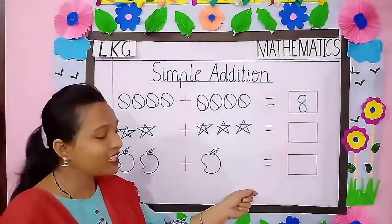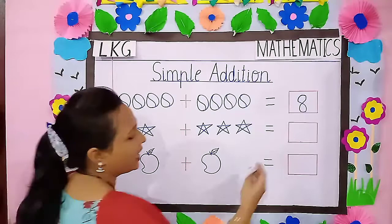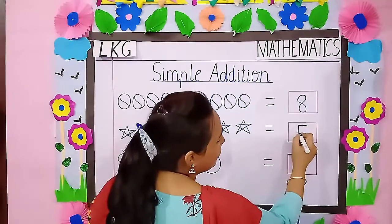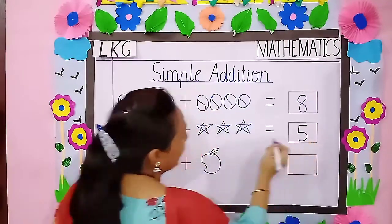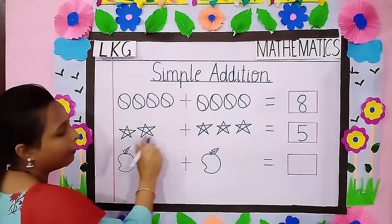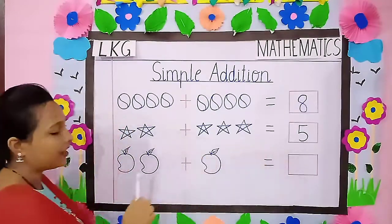What shall we write here? Yes. We have to write here number 5. That is 2 plus 3 is equal to 5.